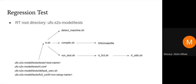On the build side, it calls compile.sh, which calls the GNU makefile. On the testing side, it calls run_test.sh, which sets up the environment variables, and then calls rtfb3.sh, which prepares a canned case in the run directory. The rtutils.sh basically contains a number of utility functions. There are also a number of input and configuration files that you need to provide.